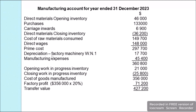We then add depreciation for factory machinery of $17,700 and manufacturing expenses of $45,400, giving a total of $360,800. Adding opening work in progress of $21,000 and subtracting closing work in progress of $25,800 gives cost of goods manufactured of $356,000.